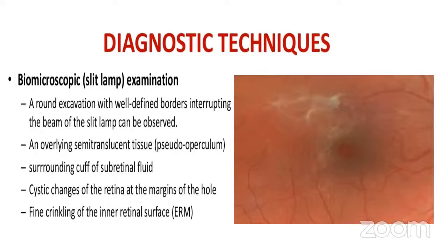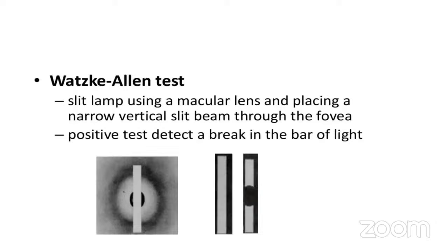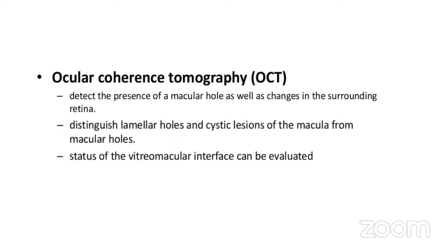Various diagnostic techniques for macular hole: slit-lamp biomicroscopy reveals a round excavation with well-defined borders interrupting the slit beam, sometimes with an overlying semi-translucent pseudo-operculum. At the margins, there can be a cuff of subretinal fluid or cystic changes, and sometimes associated epiretinal proliferation seen as inner retinal wrinkling. Clinically, the Watzke-Allen test is performed using a macular lens with a narrow vertical slit beam — a positive test is when the patient detects a break in the beam of light. OCT is the most important modality — it detects macular holes, distinguishes lamellar holes and cystic lesions, and describes the status of the vitreo-macular interface.